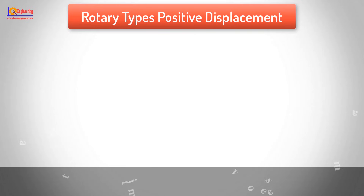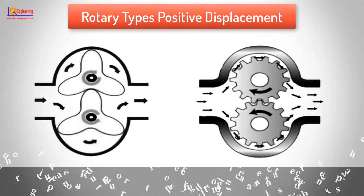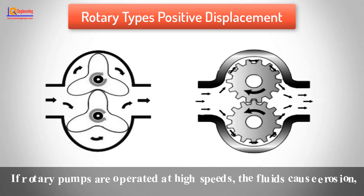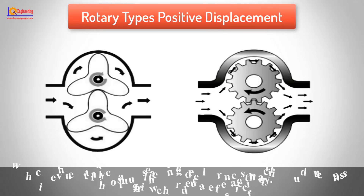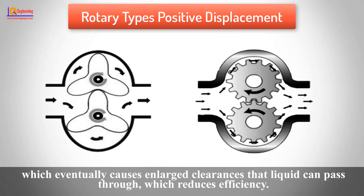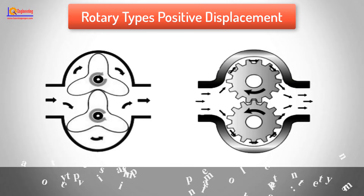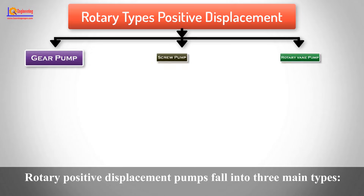The nature of rotary pumps requires very close clearance between the rotating pump and the outer edge, making it rotate at a slow, steady speed. If rotary pumps are operated at high speeds, the fluids cause erosion, which eventually causes enlarged clearance that liquid can pass through, reducing efficiency. Rotary positive displacement pumps fall into three main types.